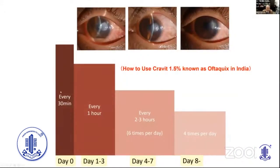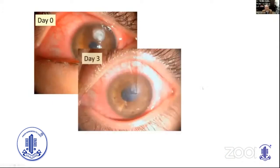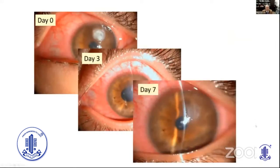Our treatment protocol for Cravit 1.5 percent: day zero every 30 minutes, followed by every one hour for the next couple of days, then from day four to seven every two to three hours — approximately six times per day. After one week, we reduce to four times per day. This is our standard protocol as seen in day zero, day three, and day seven results.